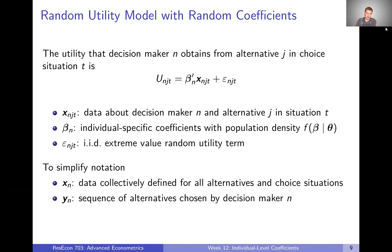So we're going to add a T index here. We're going to talk about the utility that decision maker N obtains from alternative J in choice situation T. That could be time T, but there could be other ways that you define choice situations — maybe in an experimental setting where you're exposing people to the same choices but randomizing the order, so you don't want to think of it as an ordered panel.